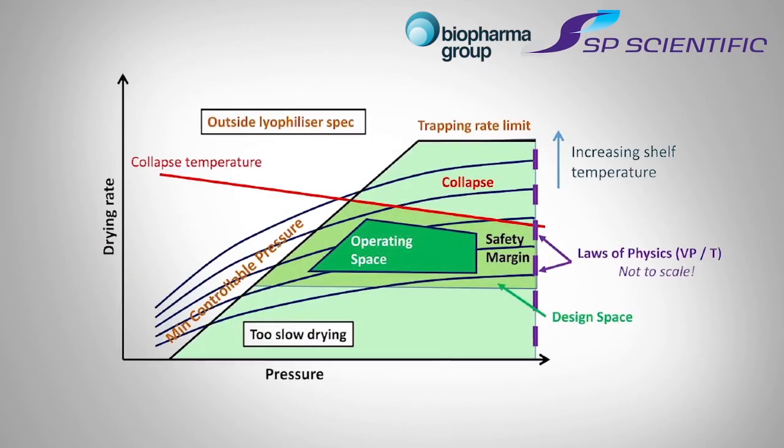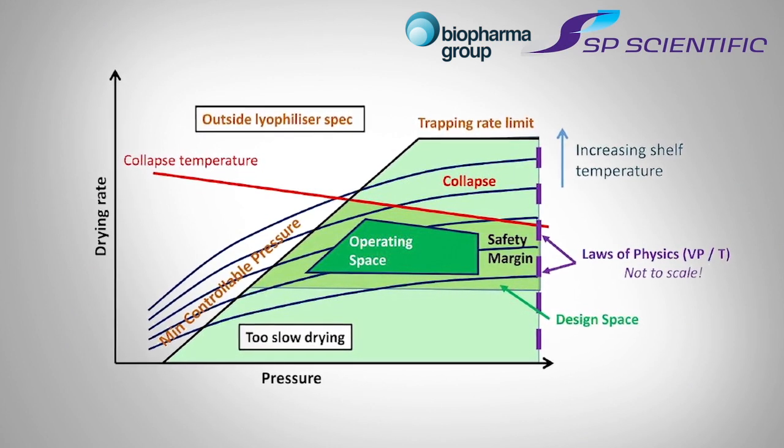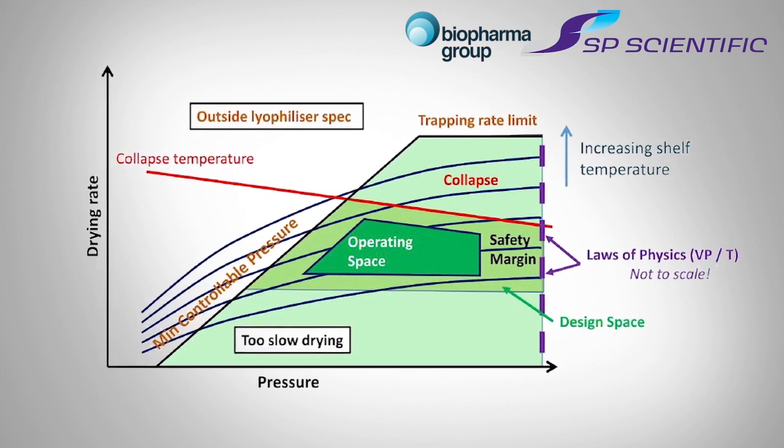The design space for primary drying is a pictorial representation of the possible or impossible conditions — shelf temperature and chamber pressure — for a particular product. One of the benefits of using it is that we can look all together at the limitations of the freeze dryer, the limitations of the product with regard to its critical temperature, the economics of the process, and so we avoid unnecessarily lengthy freeze drying cycles. We also have to take into account the laws of physics and the relationship between vapour pressure and temperature for a product.